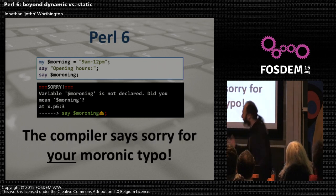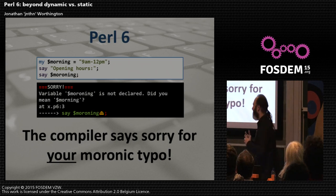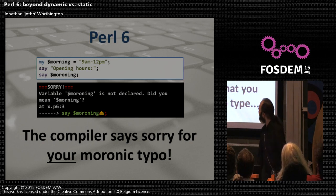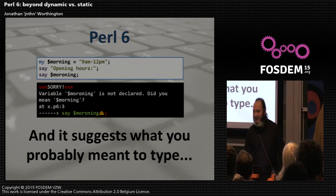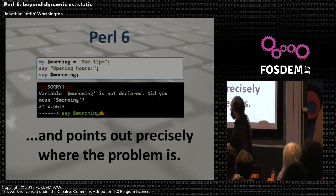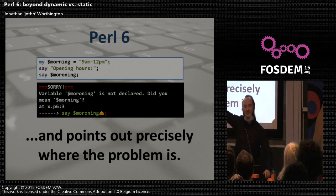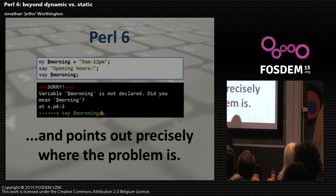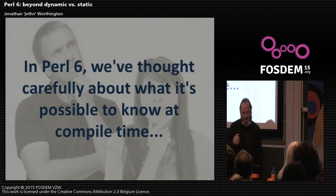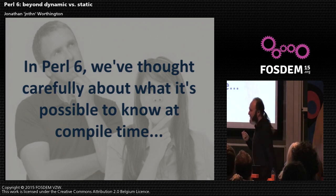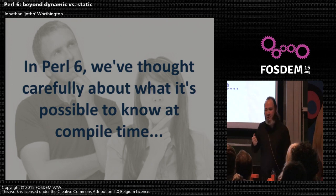Not only did Perl 6 say it was sorry and that I screwed up, it went and looked at what variables I did declare and said, 'Oh, maybe you meant mourning instead of moroning.' It also has a little green-red indicator showing exactly where on the line the problem was — like the eject symbol from an old cassette player. Everything beyond that point was sad and red. It points out exactly where on that line the problem was. That's kind of nice.